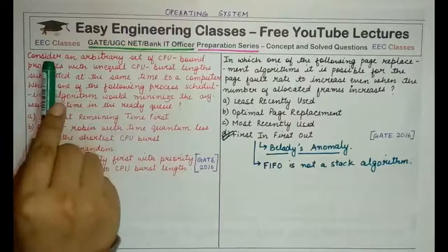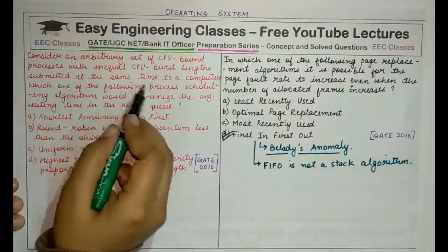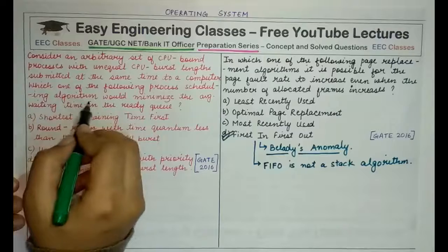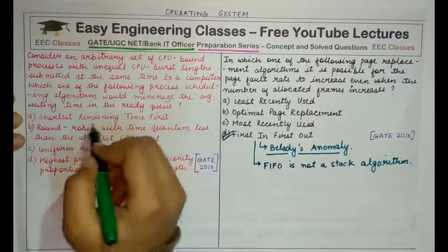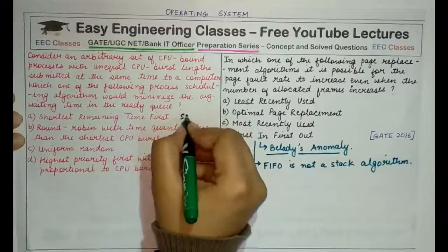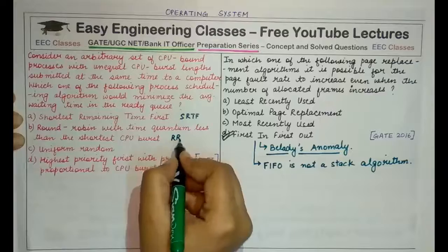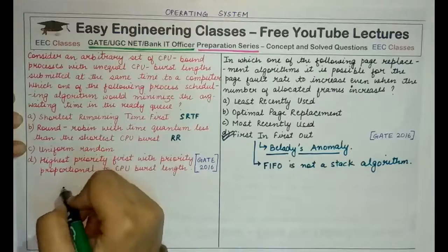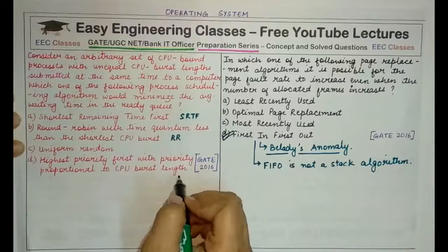Now coming to the first question: consider an arbitrary set of CPU-bound processes with unequal CPU burst lengths submitted at the same time to a computer system. Which one of the following process scheduling algorithms would minimize the average waiting time in the ready queue? The options are: Shortest Remaining Time First (SRTF), Round Robin with time quantum less than the shortest CPU burst, Uniform Random, and Highest Priority First with priority proportional to CPU burst length.